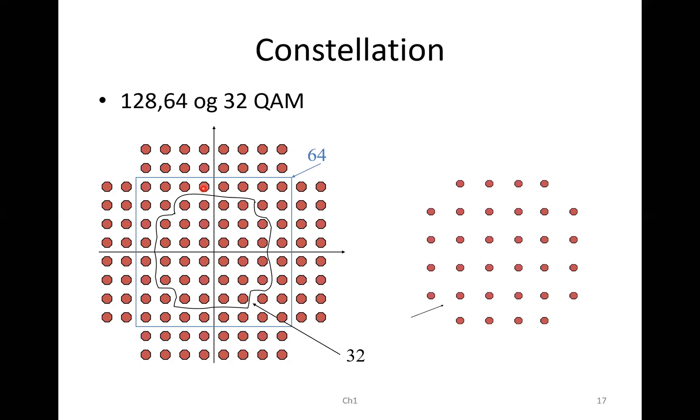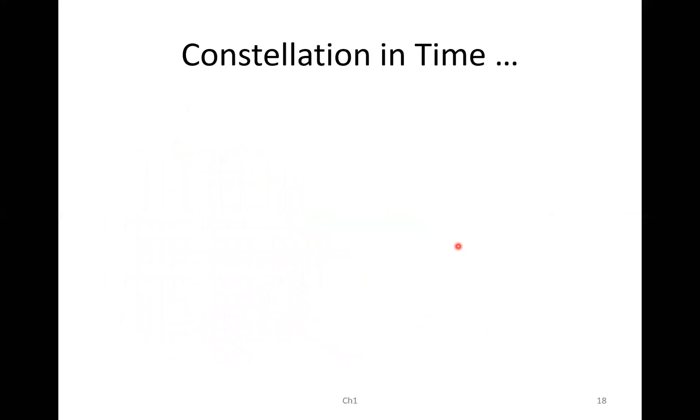And there is 32. And then the problem is that the more points you get, the closer they will be to each other. And the easier it is to get errors when the point goes from this to this point. So here you see when we have 32 QAM, we can, if we have the same power as in this case, we can have longer distance between the points. And it's less likely that we will have errors, as we see here.